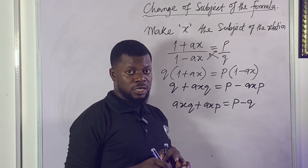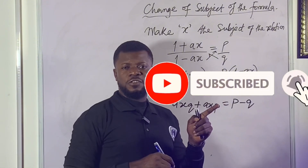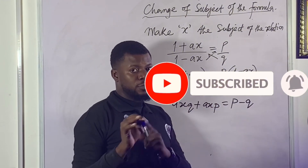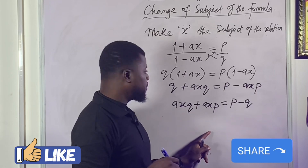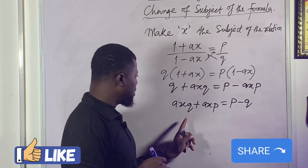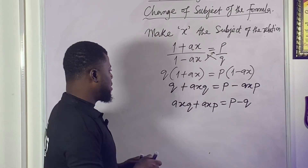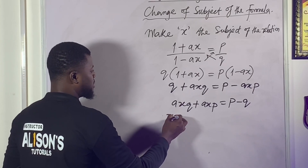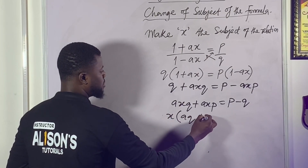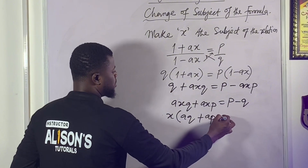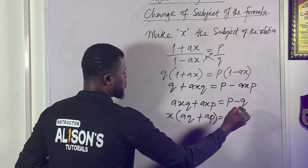If you're new to this channel, please make sure to hit the subscribe button and turn on the notification bell to get notified when I upload a new video. Please make sure to like this video and share. So what's the next point? Let's factor out x. If you factor out x, you have x times (aq plus ap).